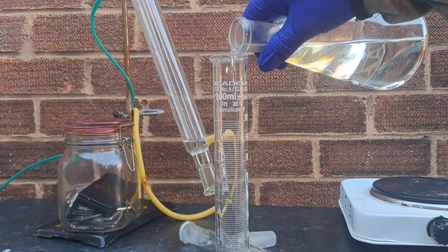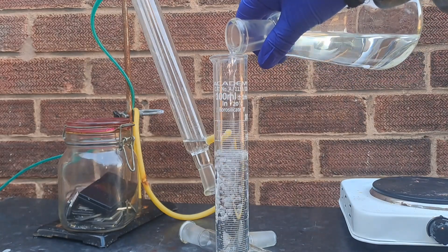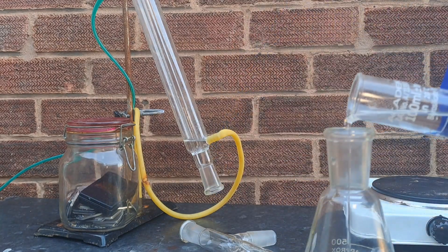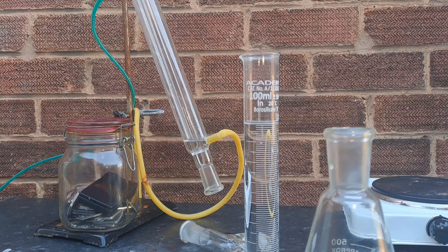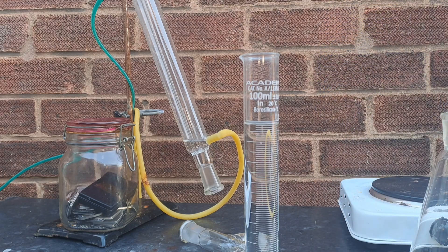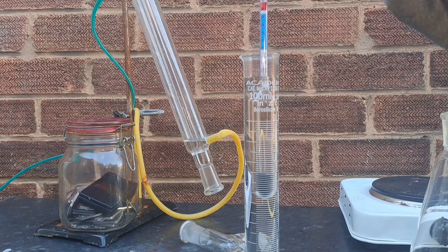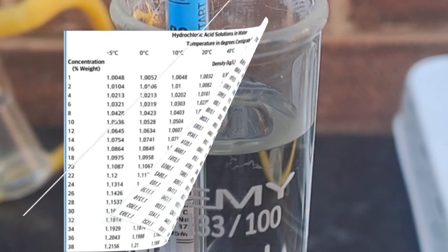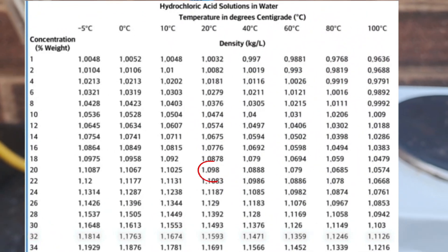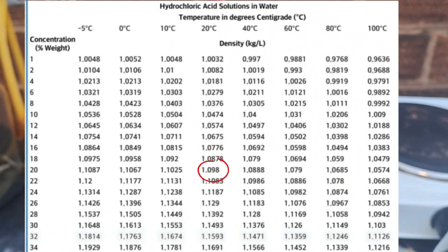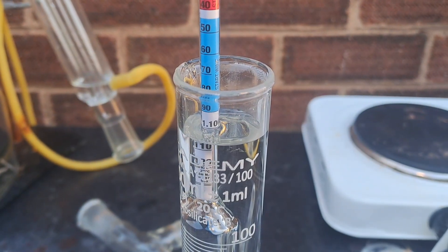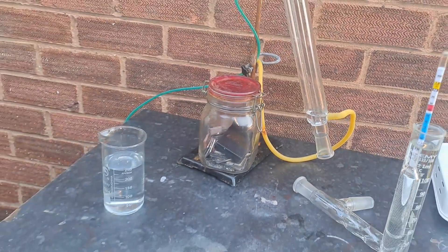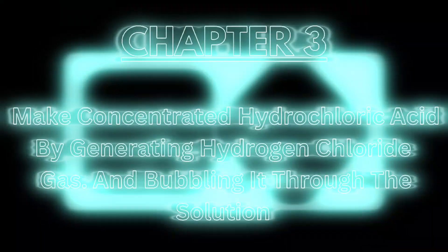I've allowed the acid fraction to cool down for a couple of hours, as temperature can affect the result of the test. It's spot on 1.1. If we take a look at the chart, it's right on the 20% mark. 20% concentration is good enough for most applications — it can be used to make dilute aqua regia and etch most metals. I prefer to have my acid concentrated, so on to chapter 3.